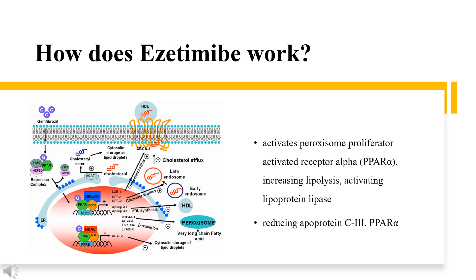Overall, ezetimibe causes a decrease in the delivery of intestinal cholesterol to the liver, reduction of hepatic cholesterol stores, and an increase in clearance of cholesterol from the blood. While the full mechanism of action of ezetimibe in reducing the entry of cholesterol into both enterocytes and hepatocytes is not fully understood, one study proposed that ezetimibe prevents the NPC1L1/sterol complex from interacting with AP2/clathrin-coated vesicles and induces a conformational change in NPC1L1, rendering it incapable of binding to sterols. Another study suggested that ezetimibe disrupts the function of other protein complexes involved in regulating cholesterol uptake, including the CAV-1 and Exyn-2 heterocomplex.